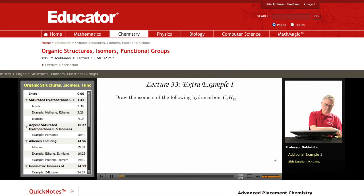In this extra example, you're asked to draw isomers. Isomers of a hydrocarbon, C6H12.